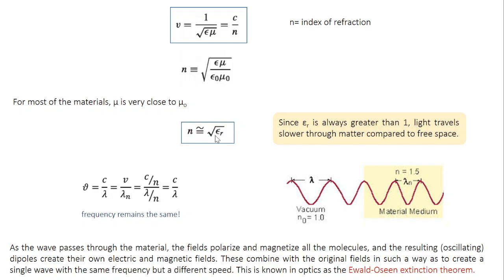Typically for any material, dielectric constant is greater than 1, which means N is always greater than 1. So you are dividing C with a value which is greater than 1, which means V is always less than C. So light travels slower through matter compared to free space. So this is the first change happen when light travels from vacuum when light enters into material. Its velocity decreases.